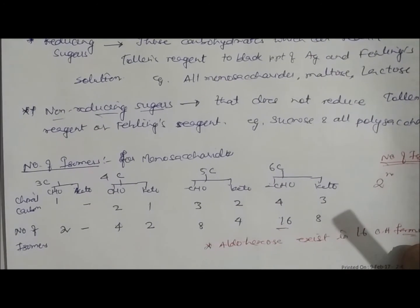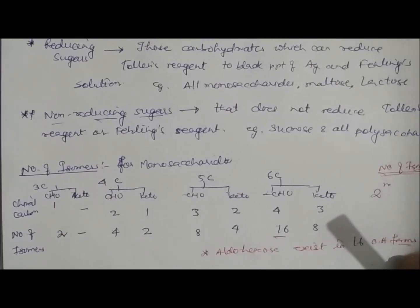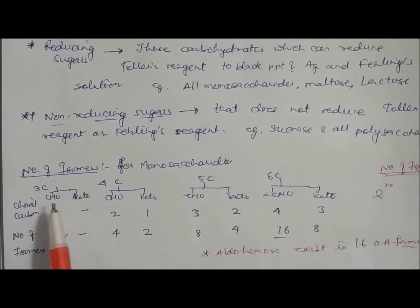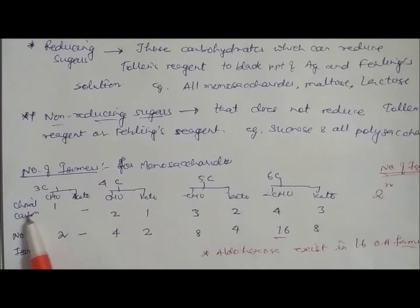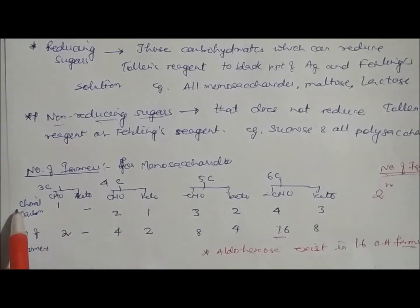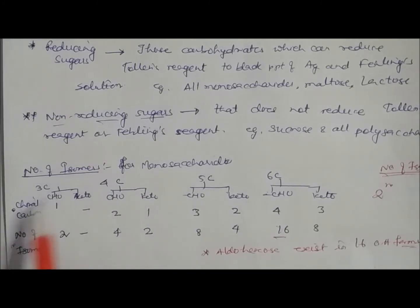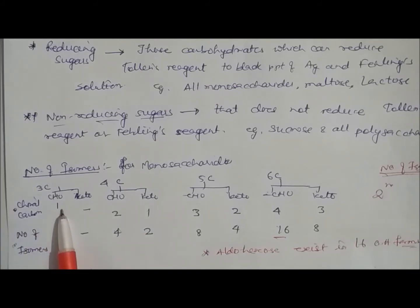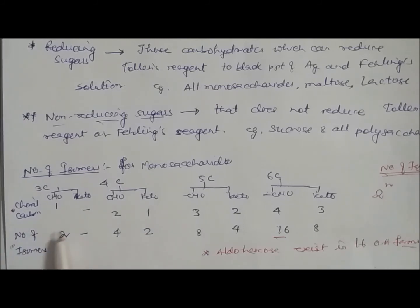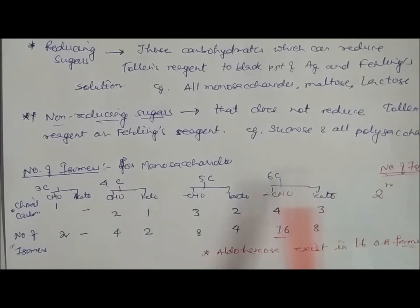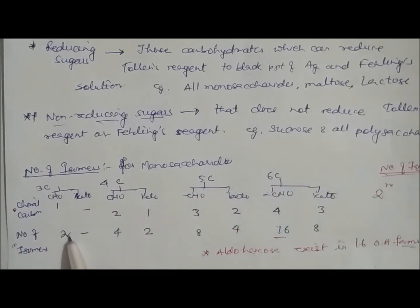On the basis of number of isomers, we consider three, four, five, and six carbon sugars. For a three-carbon aldehyde (aldotriose), there is one chiral carbon, so the number of isomers is 2¹ = 2. For the ketose triose, there are no chiral carbons, so no stereoisomers.